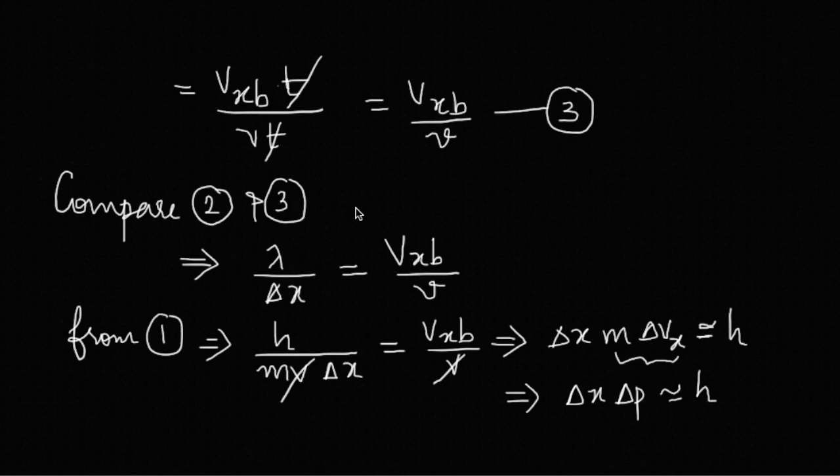So we have derived the uncertainty expression for position and momentum. In the same way, we may get the uncertainty expression for the other conjugate pairs. That is, delta y into delta py is approximately equal to h, or delta z into delta pz is approximately equal to h. These are expressions for uncertainties of the other two conjugate pairs.